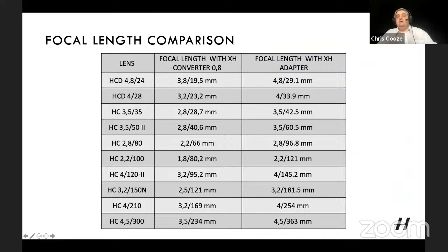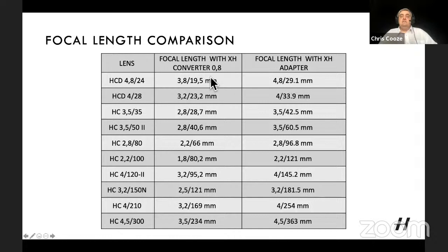To summarize: with the basic XH adapter, using a 100mm H lens takes a portion of the image circle and gives a cropped, effectively longer view. With the 0.8 converter, you keep the same field of view and gain a slightly wider aperture. The comparison slide shows H lenses and their focal lengths alongside the two different converters — the basic adapter slightly increases focal length, while the 0.8 converter gives an equivalent or slightly wider focal length.